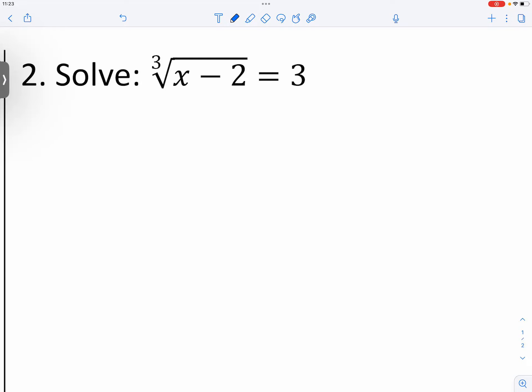One way is to do the procedural thing, which is to cube both sides. And then you would just go ahead and add two, which is going to get you 29, and this is over. Okay, it's very easy.